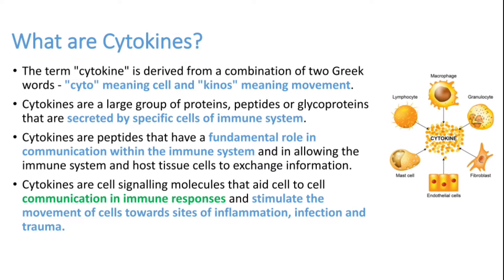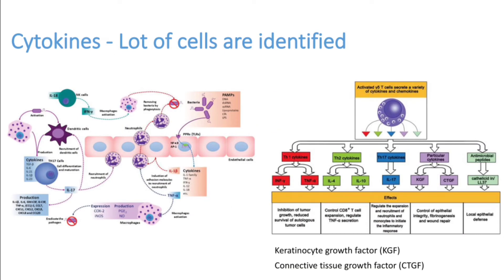Cytokines facilitate communication in immune response and stimulate the movement of cells towards the site of inflammation under normal conditions. But in conditions like viral infection, dengue fever, leptospirosis, or SLE, it will be dysregulated — we call it cytokine storm or macrophage activation syndrome. There are a large number of cytokines in our body, both identified and unidentified. Different types include interleukins, KGF, CTGF, and many others, which stimulate the immune response in a normally regulated manner.